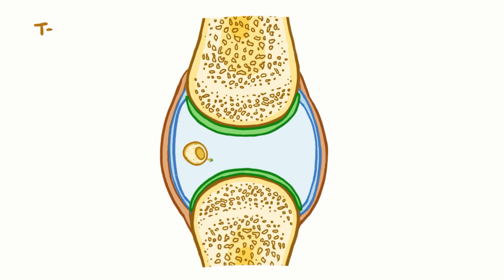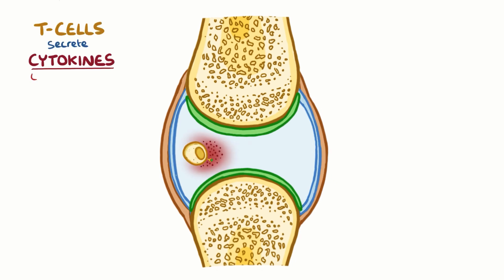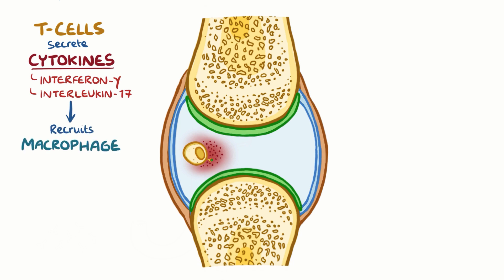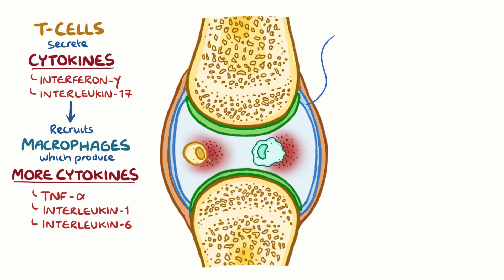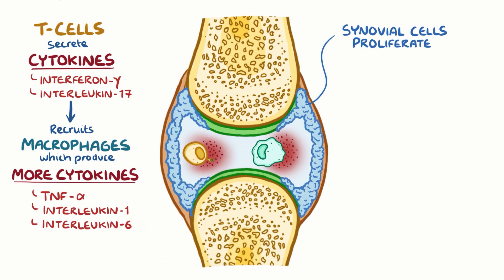Once there, T cells secrete cytokines like interferon gamma and interleukin-17 to recruit more inflammatory cells like macrophages into the joint space. Macrophages also produce inflammatory cytokines like tumor necrosis factor or TNF-alpha, interleukin-1 and interleukin-6, which together with the T cell cytokines, stimulate synovial cells to proliferate.